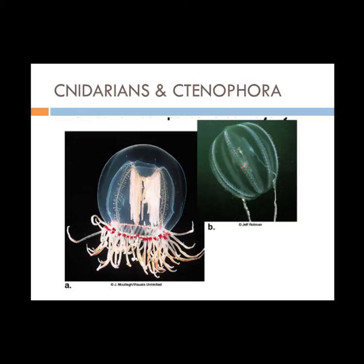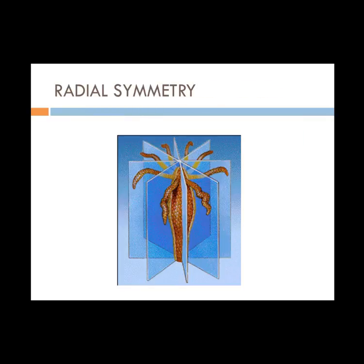Cnidarians include hydras, jellyfish, and sea anemones, and ctenophorans include comb jellies. These have radial symmetry, meaning they have a top and a bottom but no head or rear end, and no left or right side. Their body is divided into planes like spokes on a wheel or pieces of a pie.